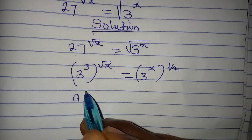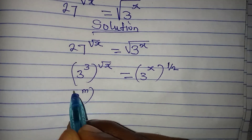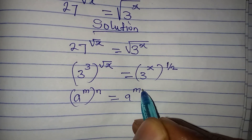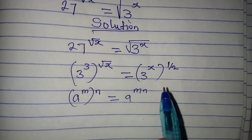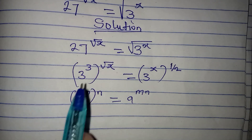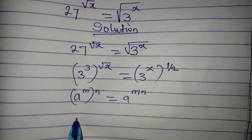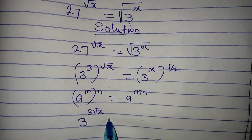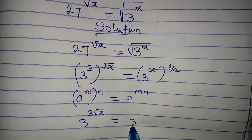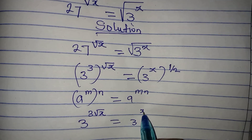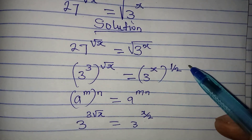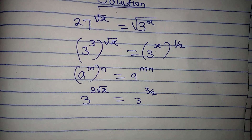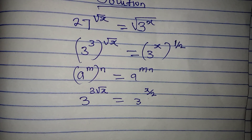Now, if you have a to the power of m, to the power of n, this is the same as a to the power of m times n — we multiply the two powers together. So we get 3 to the power of 3 root x, equal to 3 to the power of x over 2, because x multiplied by 1 over 2 is x over 2. Now we have the same base, so we can work with the powers.